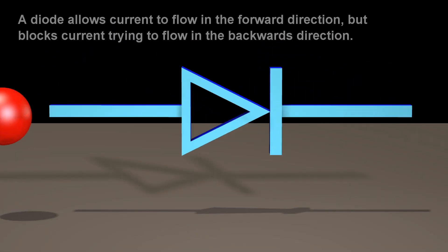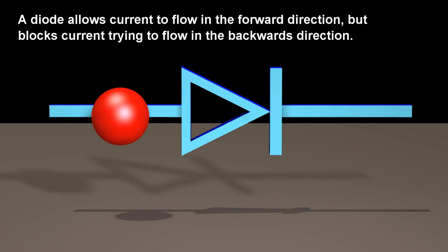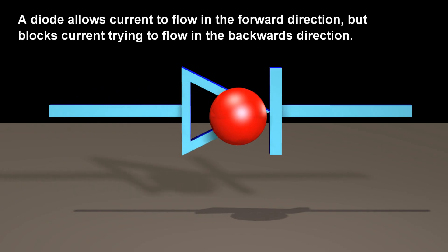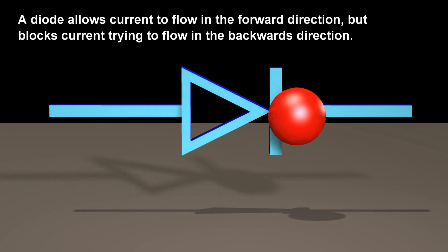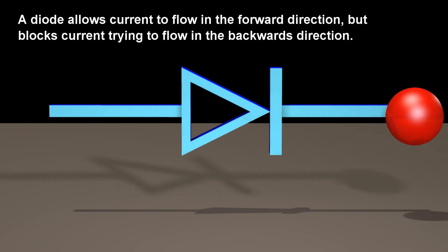A diode allows current to flow in the forward direction, but blocks current trying to flow in the backwards direction.